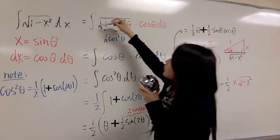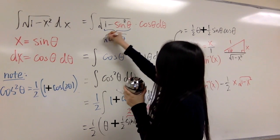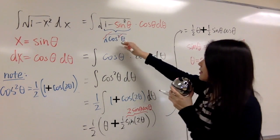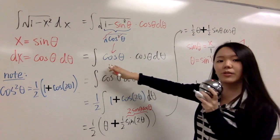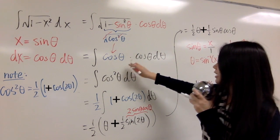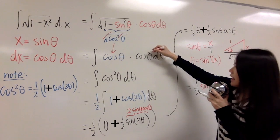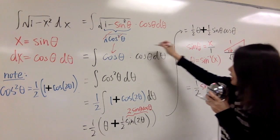And don't forget the square root here, you can cancel out here, then that's only cosine theta, and you put your dx back, cosine theta d theta.